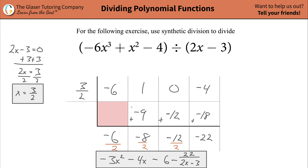And this down here, ladies and gentlemen, is indeed your quotient. That's the quotient — negative 3x squared minus 4x minus 6, minus 22 over 2x minus 3. That's all there is to it.